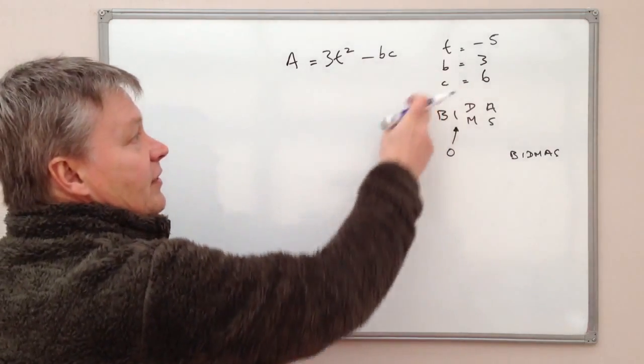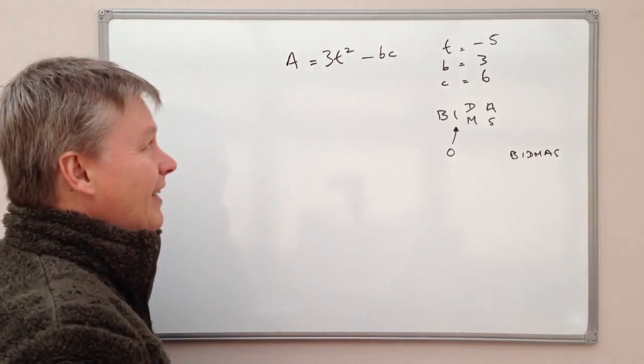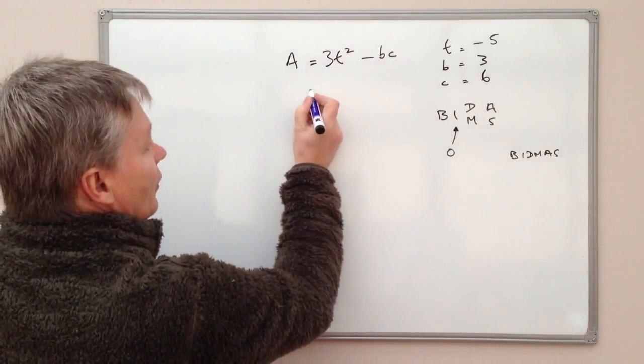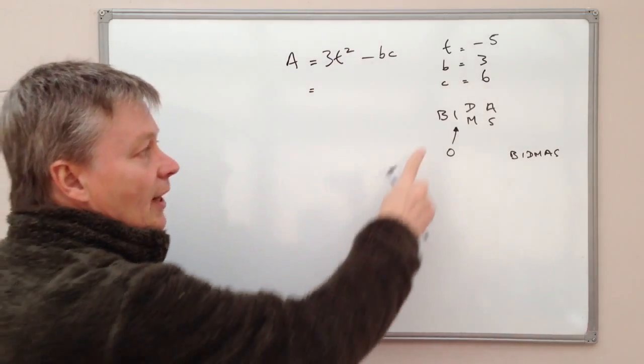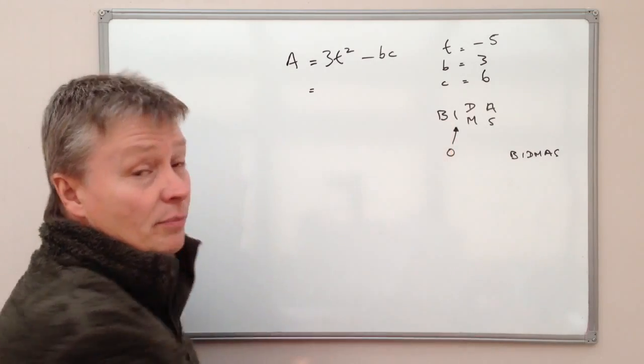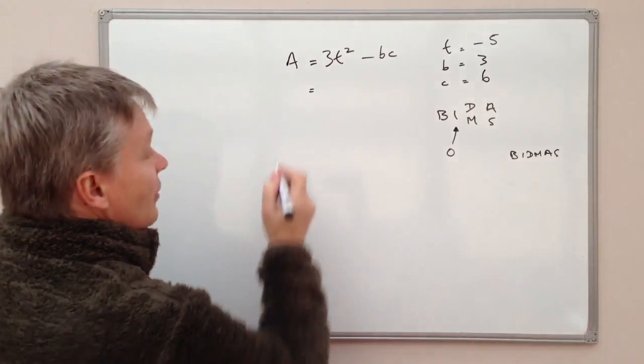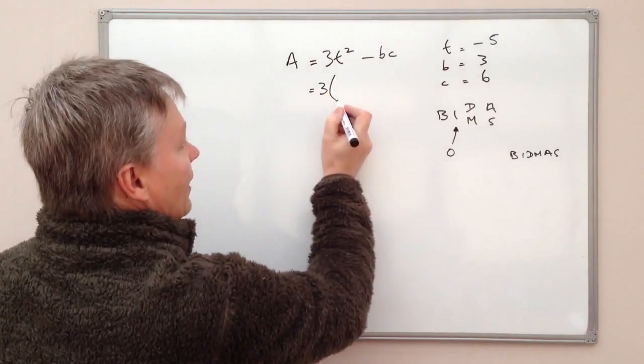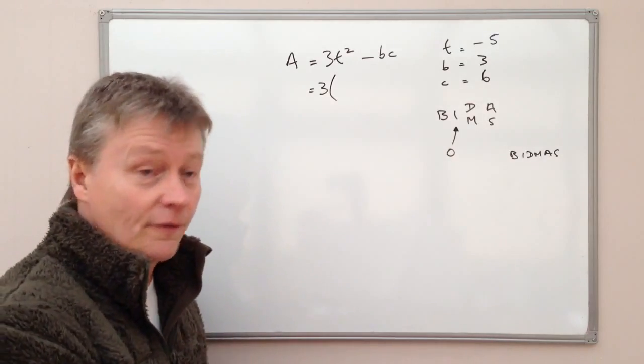So what I'm going to do is I'm going to feed these numbers into this formula. But I'm going to make use of brackets to make the formula a little bit easier to understand. So at the moment I have 3 times T squared. Well if we look at our BIDMAS formula, the bit I need to deal with first is the index or orders before I deal with the multiplication of 3. So what I'm going to do is I'm going to keep the 3 to one side and I'm going to use a bracket just because it makes my life a little bit easier and it reminds me that I'm going to do the work in brackets first.